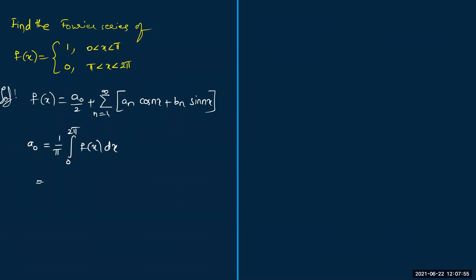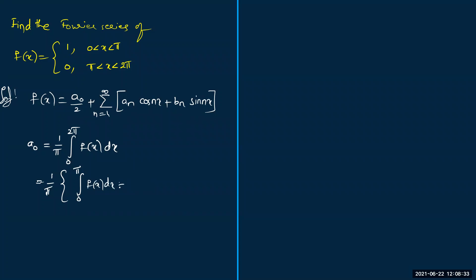For this particular case, the function has a discontinuity at pi. When evaluating the integral where the function has a break, we split the integral into two different parts: one by pi times the integral from zero to pi of f(x) dx plus the integral from pi to two pi of f(x) dx.